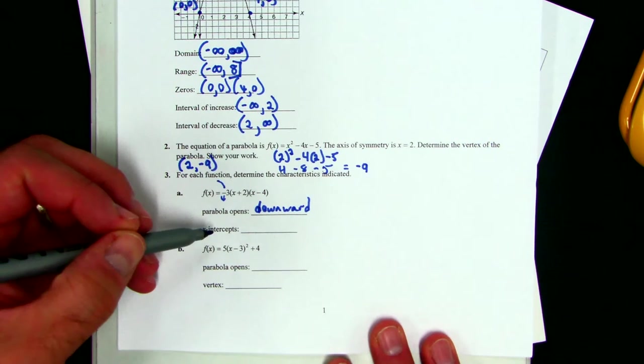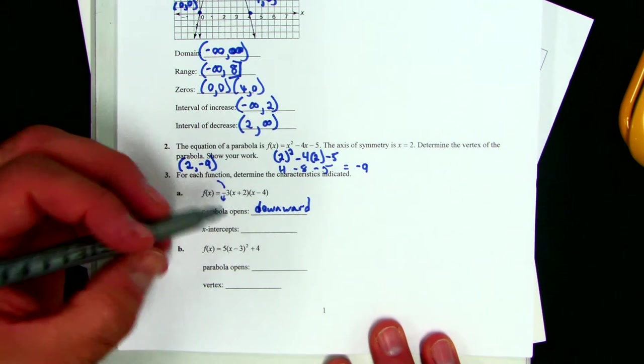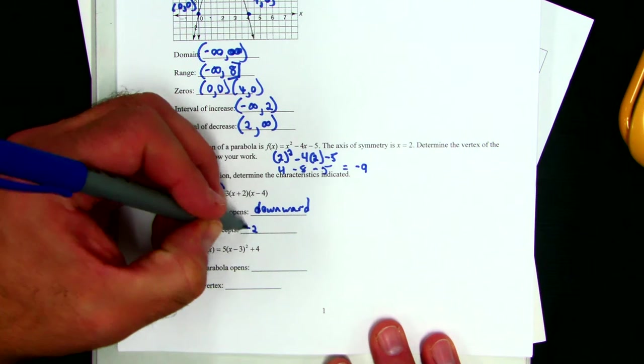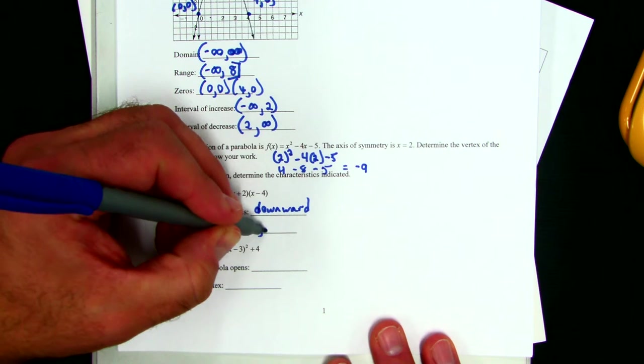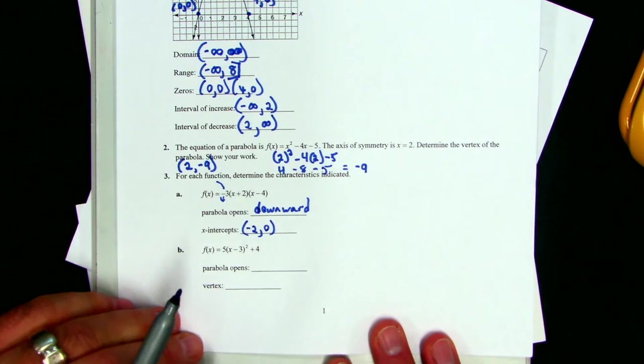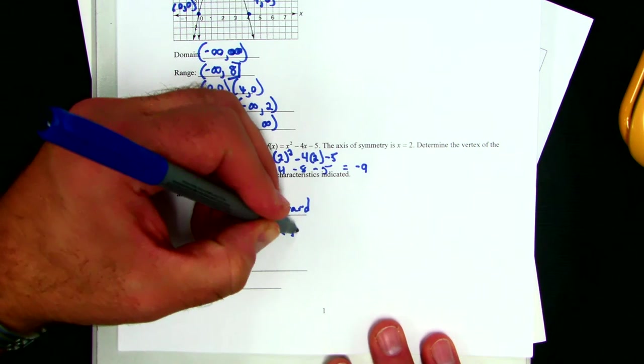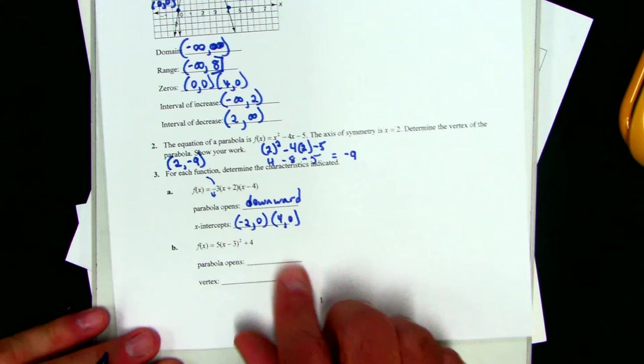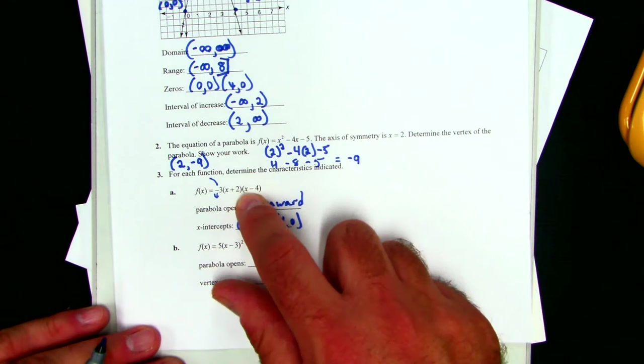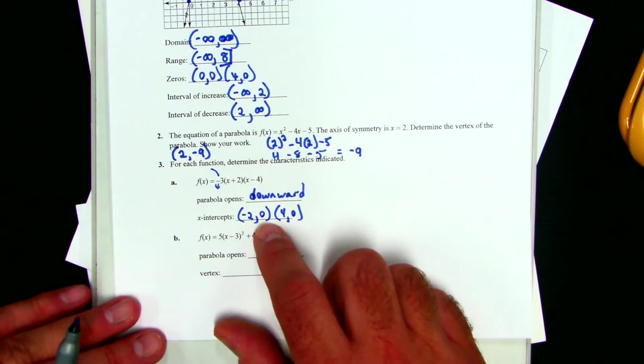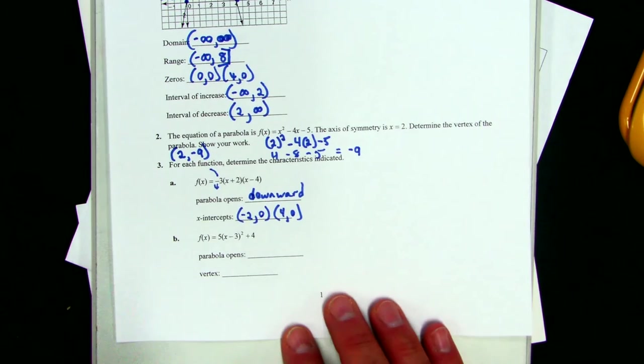And then the x-intercepts are easy because they gave them to me. But remember, we're using the opposite. So it's negative 2, 0, and 4, 0, because they're always points. We had 2 parentheses when we started. My answer has to have 2 parentheses.